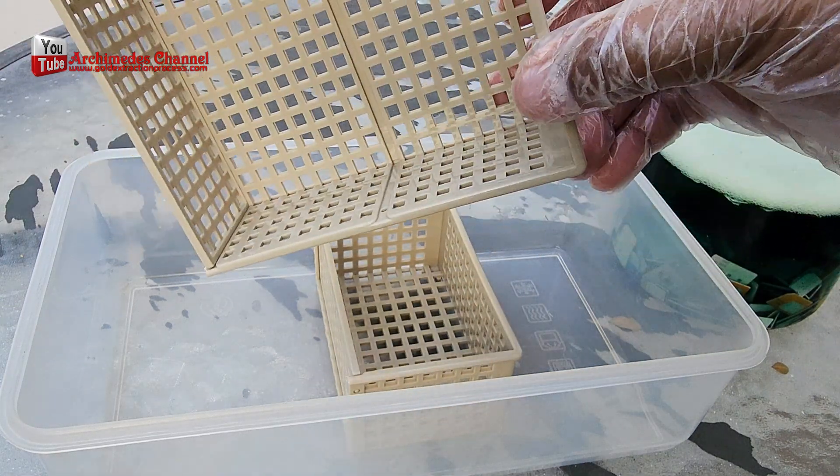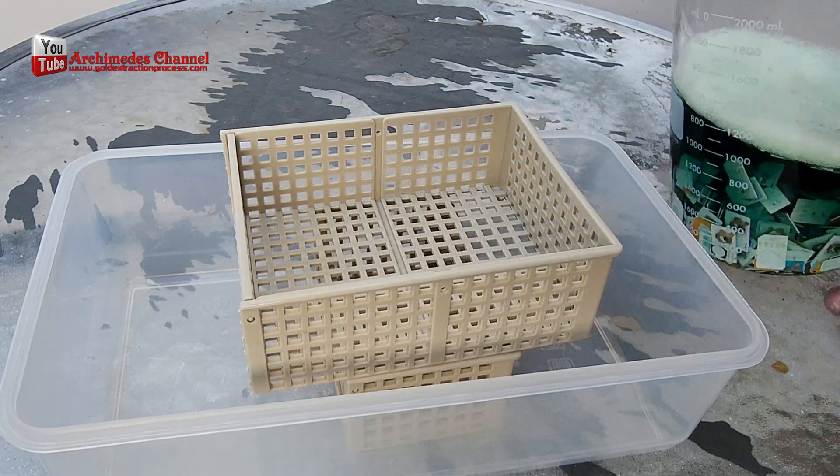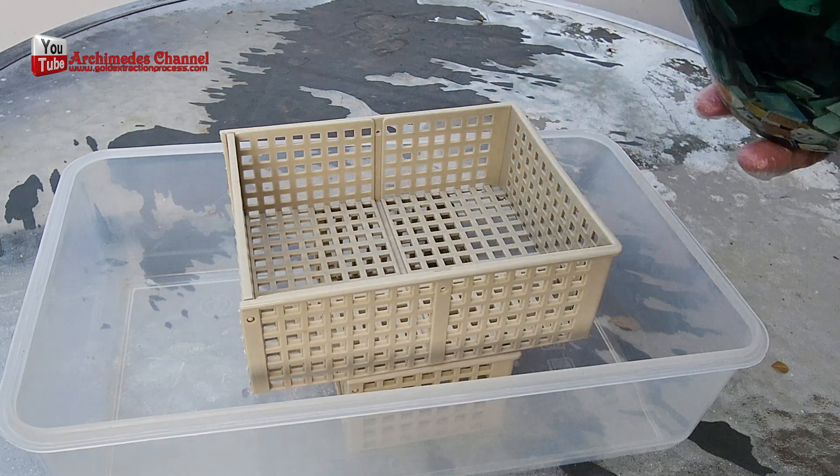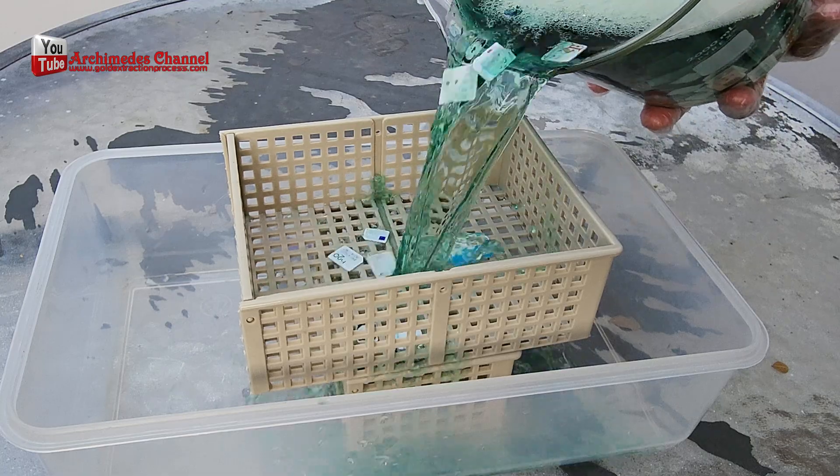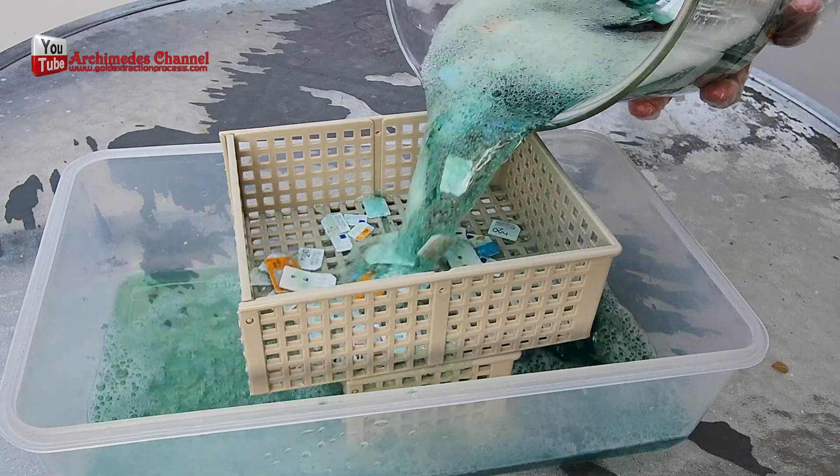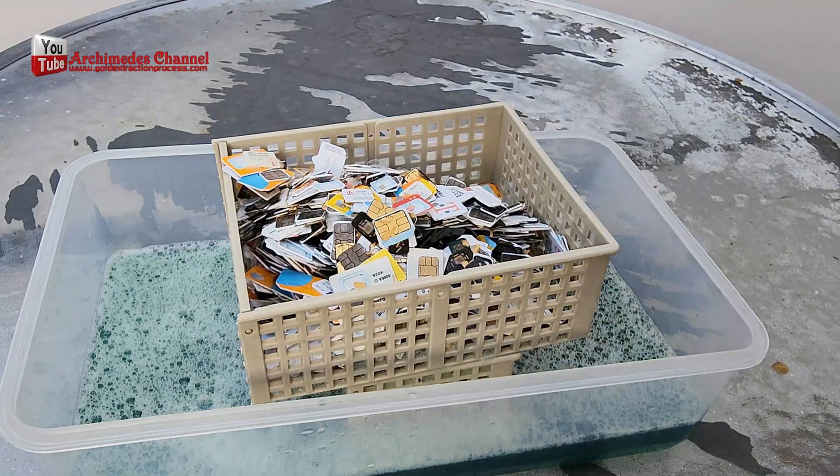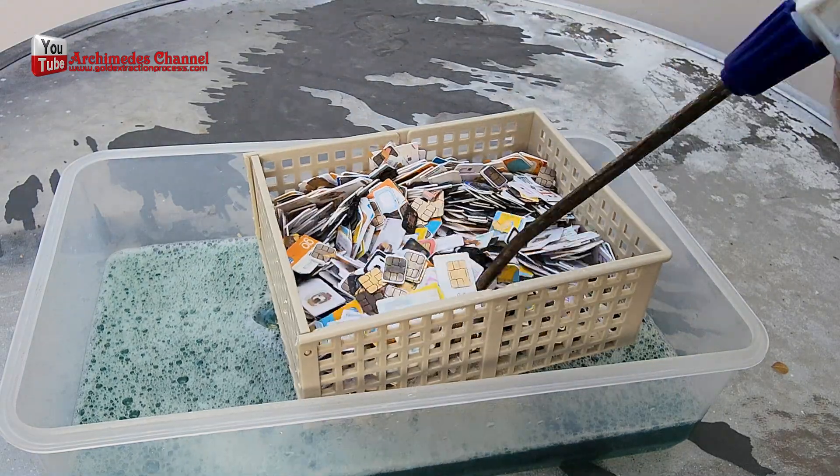In this step, you will need to separate the plastic from the gold foil that fell off the mobile phone SIM card by the plastic grid, then remove the gold foil from the toilet cleaner with a cloth filter or coffee filter.